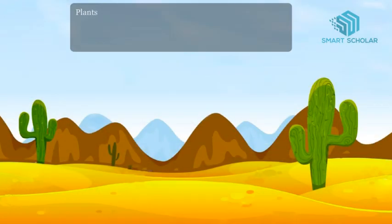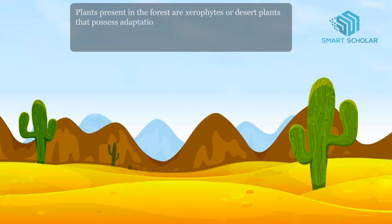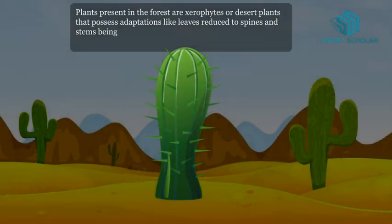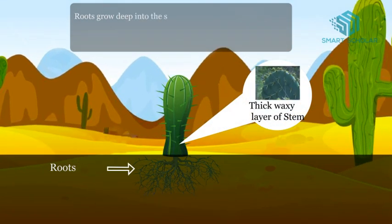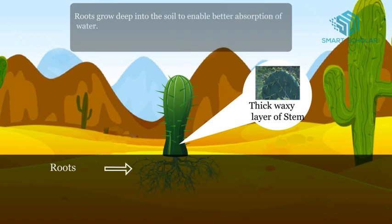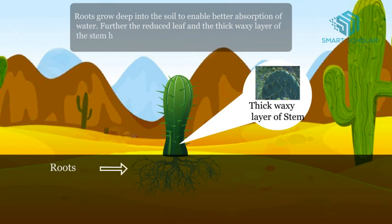Plants present in the desert are xerophytes, or desert plants, that possess adaptations like leaves reduced to spines and stems being green and fleshy to enable photosynthesis and store water. Roots grow deep into the soil to enable better absorption of water. The reduced leaf and the thick waxy layer of the stem helps minimize transpiration.